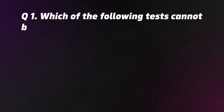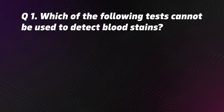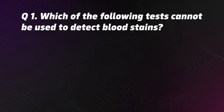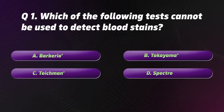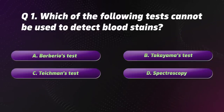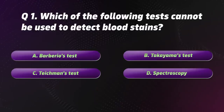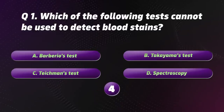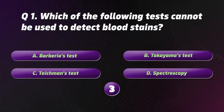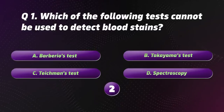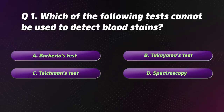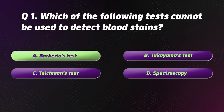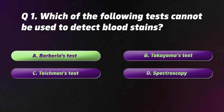Question 1. Which of the following tests cannot be used to detect blood stains? Options: A. Barbario's test, B. Takayama's test, C. Teichmann's test, D. Spectroscopy. The correct option is A, Barbario's test.